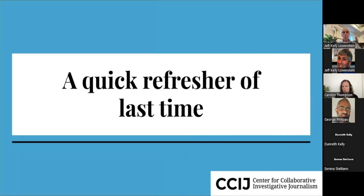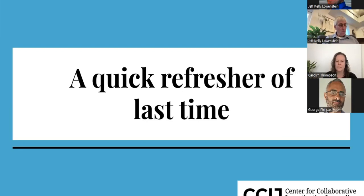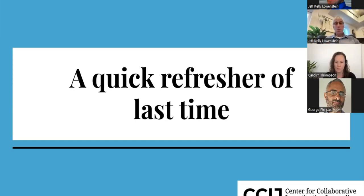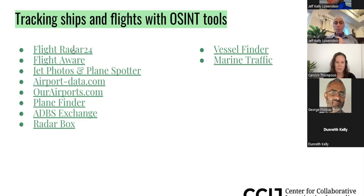A quick refresher of what part one was about. OSINT is this kind of really large space that includes all sorts of tools — basically accessing information that is somehow publicly available. Sometimes you have to pay for it or use fancy tools or very technical means, but it's basically using different research methods to try to access information that's already out there. Last time, Adjibola talked about tracking ships and tracking flights with these types of tools, showing us specifically how to use them.